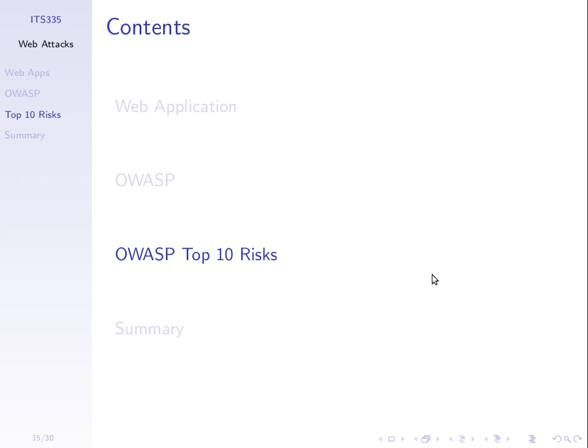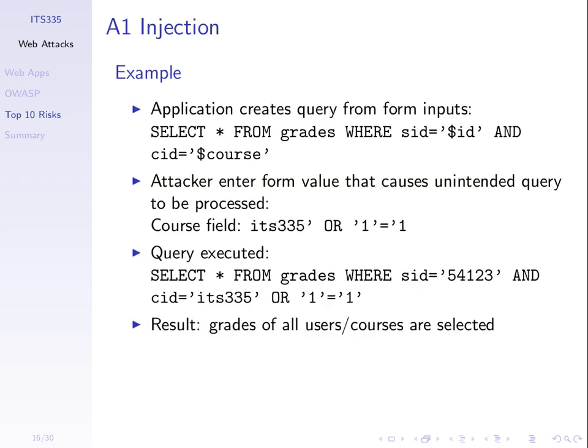We've mentioned through some demos most of the top 10 risks as classified by OWASP. They do some analysis and try to find out what the attacks on different companies are. Let's summarize the 10 that we've mentioned and maybe a few new ones. We've seen an example of injection — the number one risk.